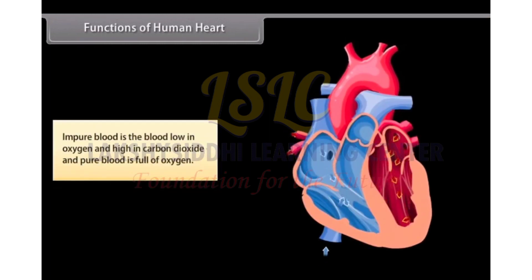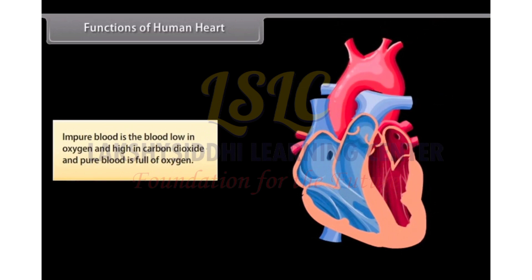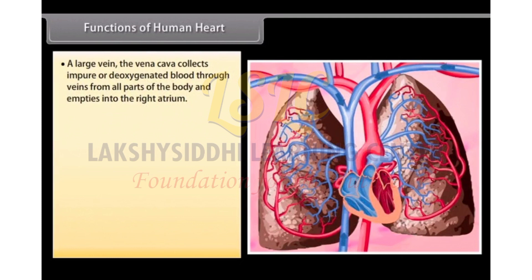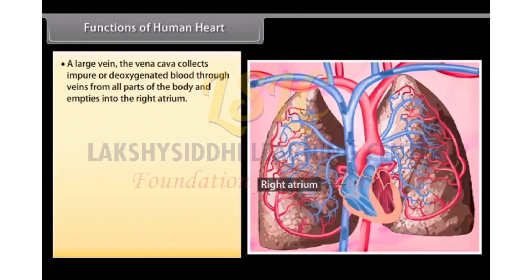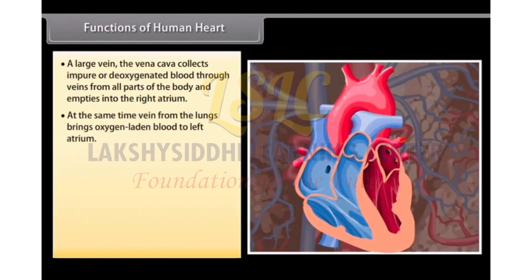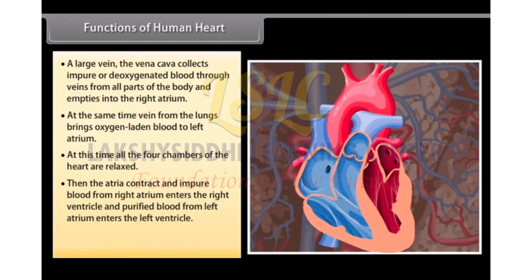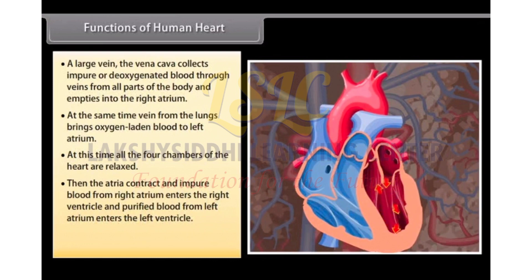Impure blood is blood low in oxygen and high in carbon dioxide, and pure blood is full of oxygen. A large vein, the vena cava, collects impure and deoxygenated blood through veins from all parts of the body and empties into the right atrium. At the same time, a vein from the lungs brings oxygen-laden blood to the left atrium. At this time, all four chambers of the heart are relaxed. Then the atria contract and impure blood from the right atrium enters the right ventricle, and purified blood from the left atrium enters the left ventricle.